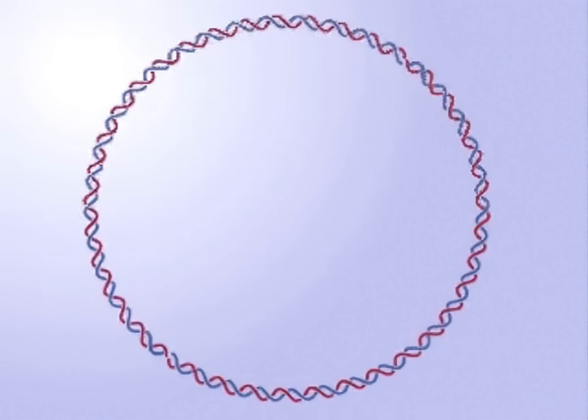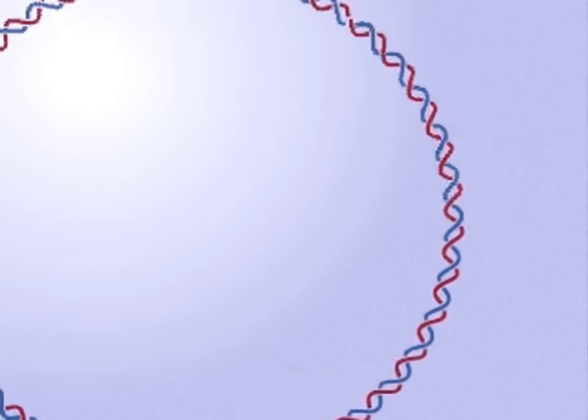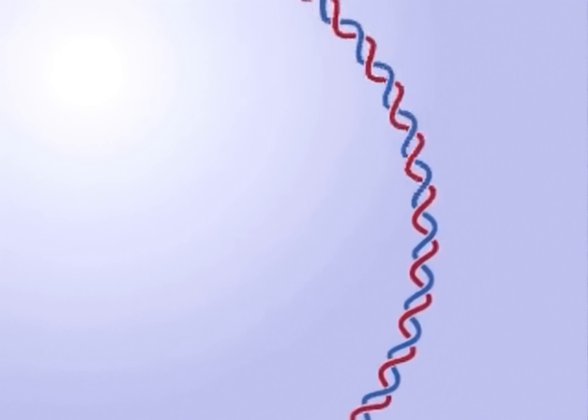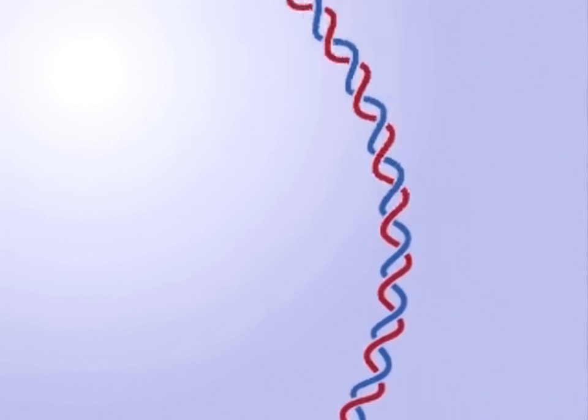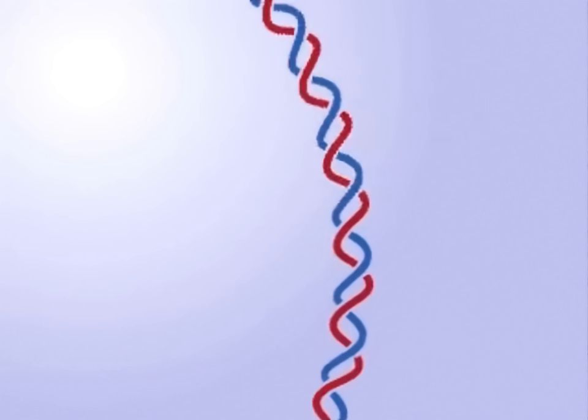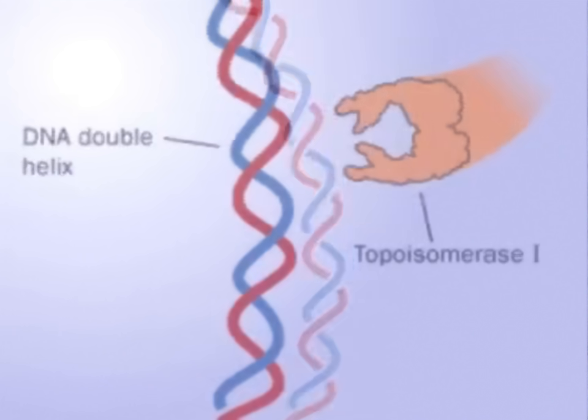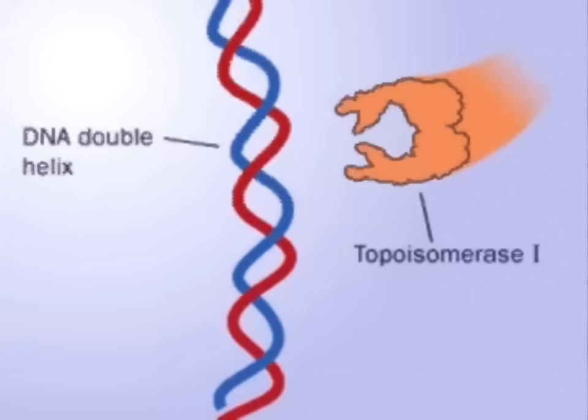This problem has been best characterized in small circular DNAs. There are two methods of dealing with this problem in DNA. One cuts only one strand of the DNA double helix, and the other cuts both strands. Let's look at the first.